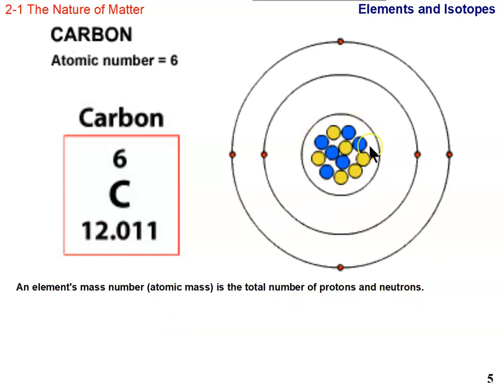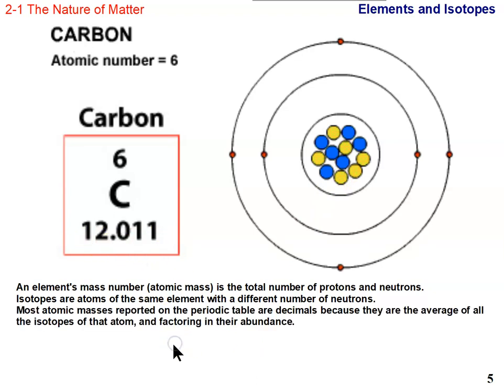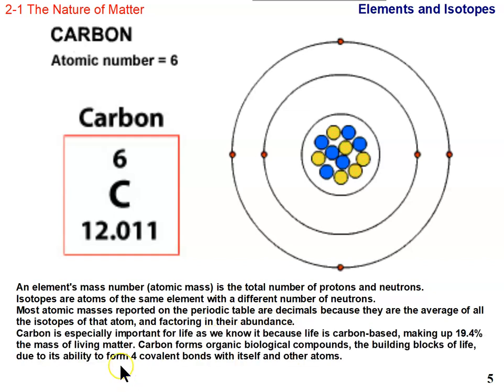If you count up the total number of protons and neutrons in this nucleus, you'll notice that it adds up to 12. Well, not 12.011. What's the decimal all about? There are isotopes of different elements. Carbon has three isotopes. What we see here reported as the atomic mass is actually the combined or the average masses of all the isotopes, taking into account their abundance. So it's a weighted average.